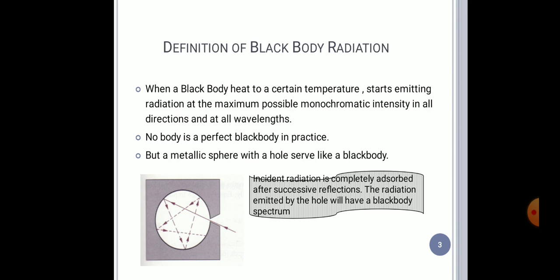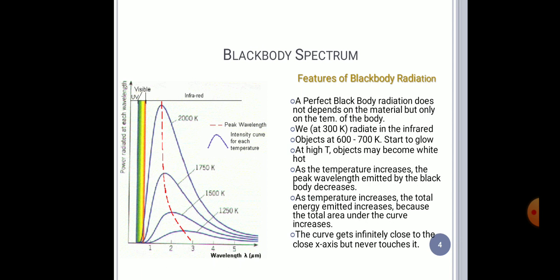The metallic sphere becomes hotter, and when it reaches a certain temperature, it starts to radiate. This radiation that is emitted produces a spectrum which we call the black body spectrum, as you can see on the screen.